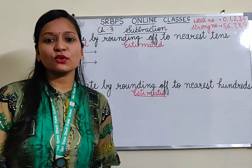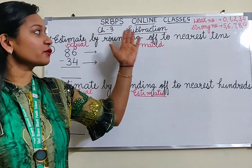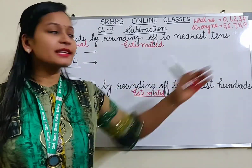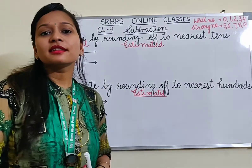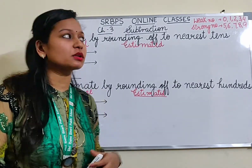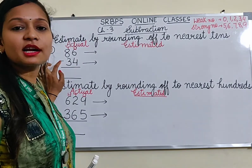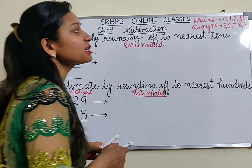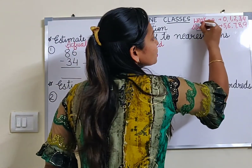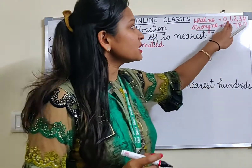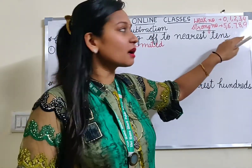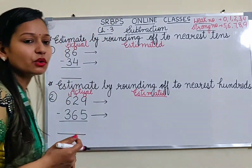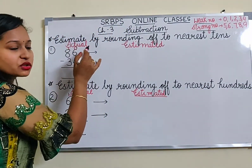Hello everyone, welcome to SRDPS Online Classes. This is our new topic of Chapter 3: estimating by rounding off to nearest tens or nearest hundred. This topic you have already studied in the addition chapter, but this time we will study how to do estimation with minus. We have some weak numbers: 0, 1, 2, 3, 4 are our weak numbers, and 5, 6, 7, 8, and 9 are our strong numbers.